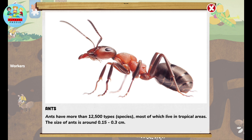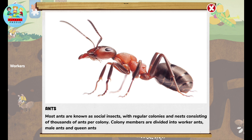Ants have more than 12,500 species, most of which live in tropical areas. The size of ants is around 0.15 to 0.3 cm. Most ants are known as social insects with regular colonies and nests consisting of thousands of ants per colony. Colony members are divided into worker ants, male ants, and queen ants.